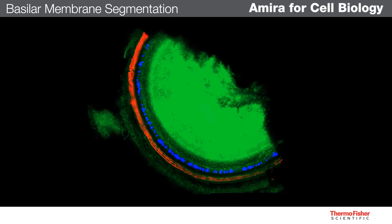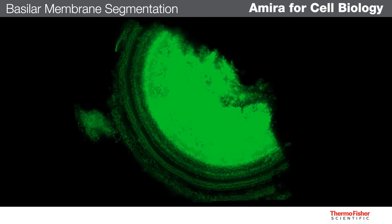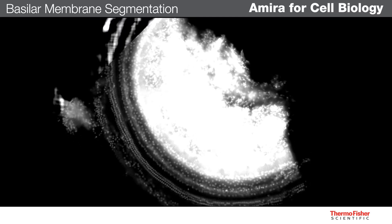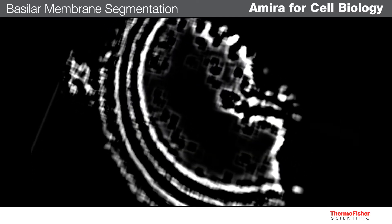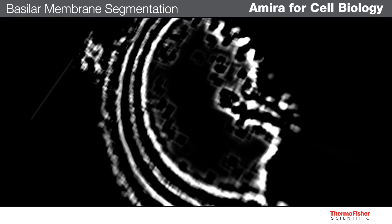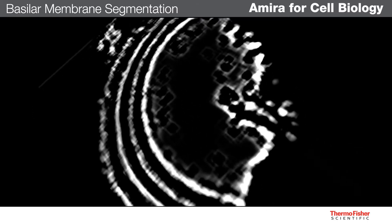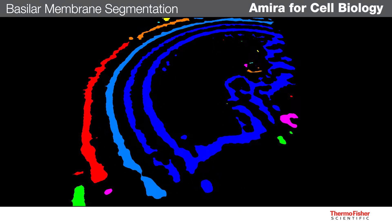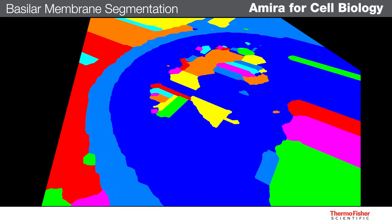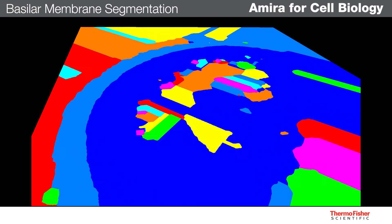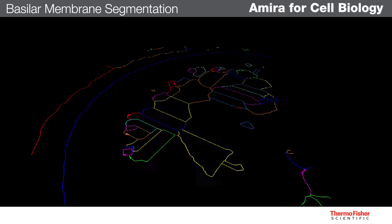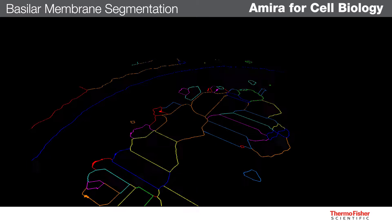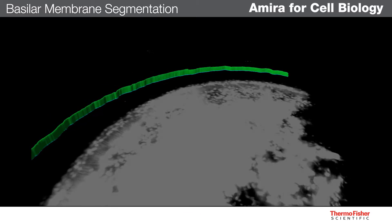The basilar membrane is implied by a gap between the two lines of hair cells in the green channel. Since it's difficult to directly threshold this gap by itself, we will begin by filtering the image to accentuate all gaps. We can then highlight the edges of the gap with an automatic threshold, then use a watershed algorithm to grow these edges together until they meet in the middle of the gap. Only the middle of the largest gap represents the membrane, so we need to mask everything outside the region of interest, then filter out all other watershed lines.